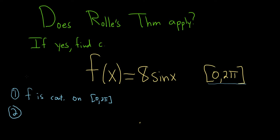The second condition in Rolle's theorem is that the function is differentiable on the open interval. Well, it's the sine function, so it's differentiable everywhere. So in particular, f is differentiable on the open interval (0, 2π). So that condition also checks.